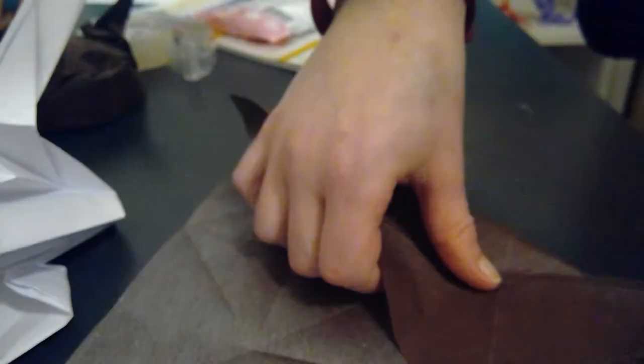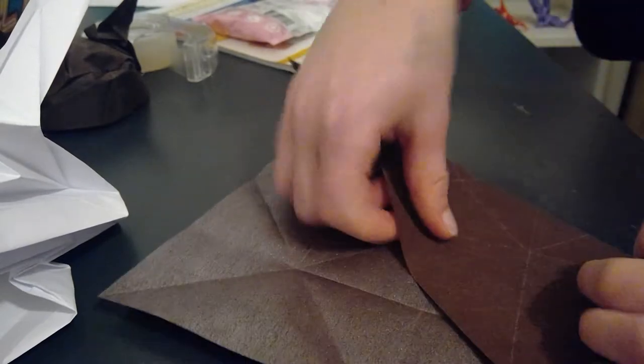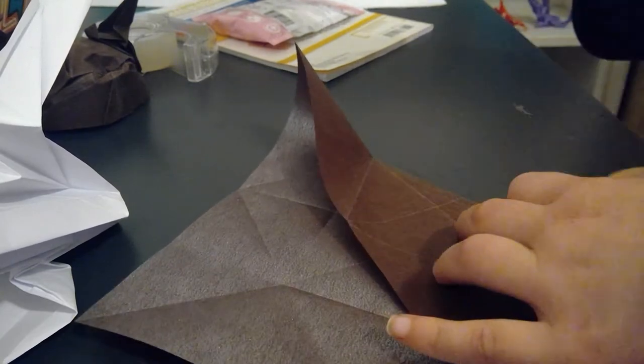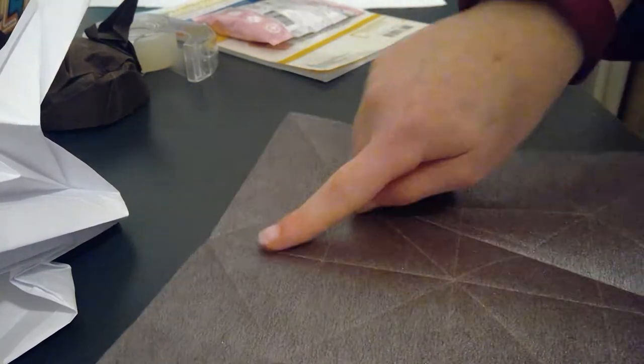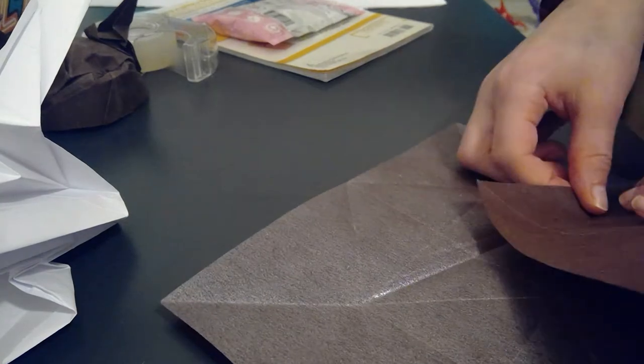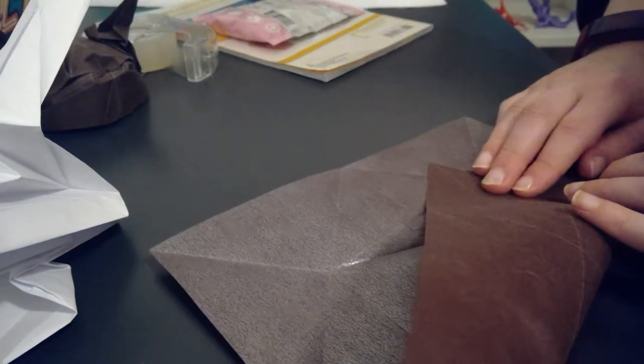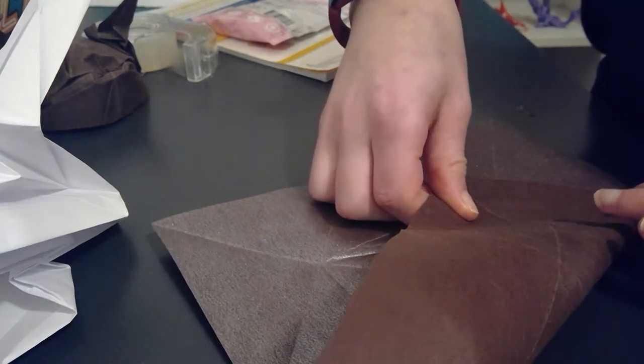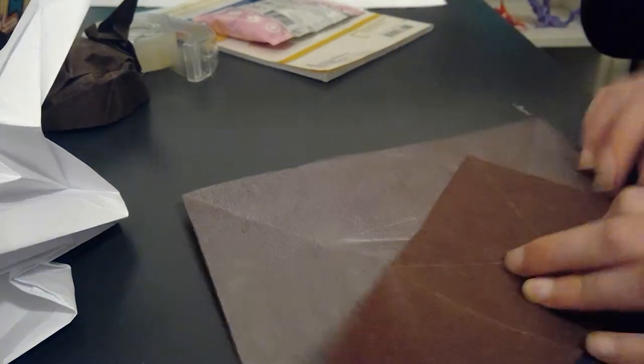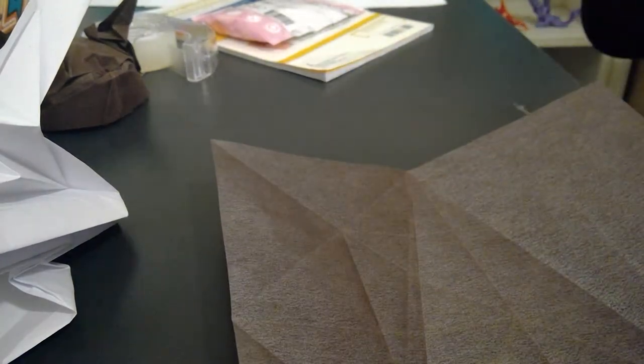Crease from the corner to where the rectangular middle half crease hits the edge. You're going to do that both ways for each time the half crease hits the edge. Fold it rectangularly, but don't fold it all the way - only to the intersection.